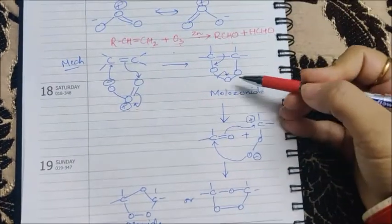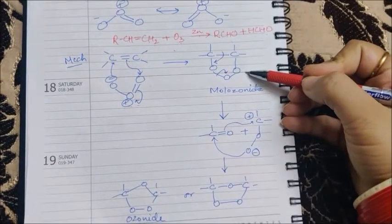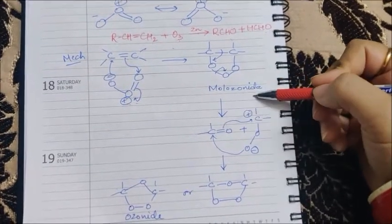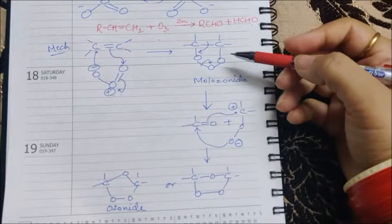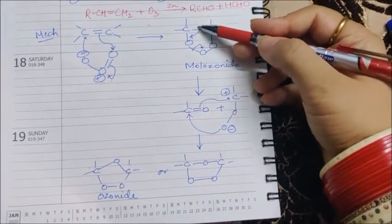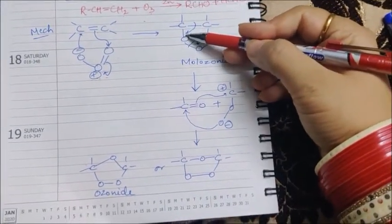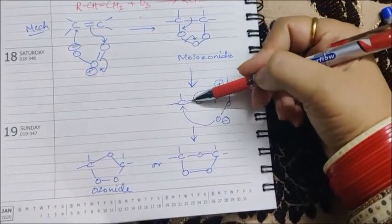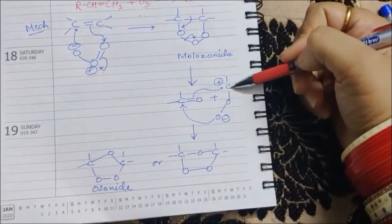And this kind of structure is formed, which is called molozonide. Now there is a rearrangement that will be occurring, and there will be a change in the bonding and a carbonyl bond will be generated.